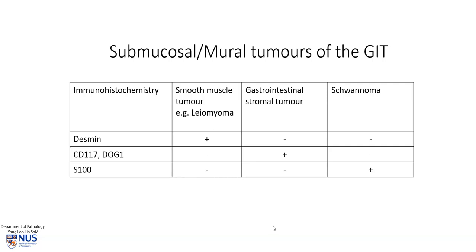If we do see necrosis, we would be worried about a malignant smooth muscle tumour known as a leiomyosarcoma. The main differential diagnosis for submucosal or mural tumours of the gastrointestinal tract with a spindle cell appearance on microscopy would be smooth muscle tumours, gastrointestinal stromal tumour, and schwannoma.